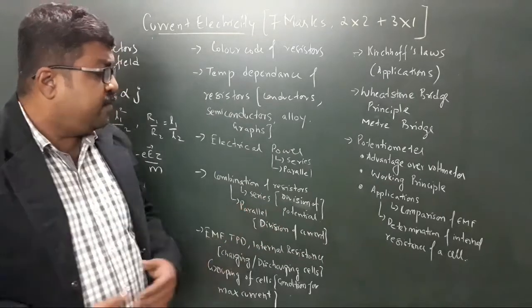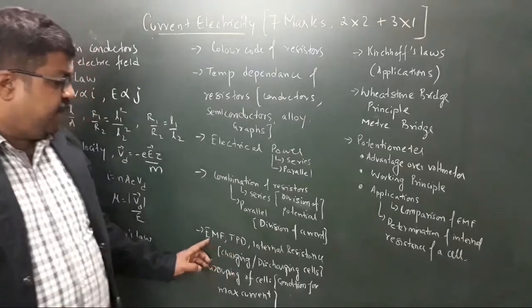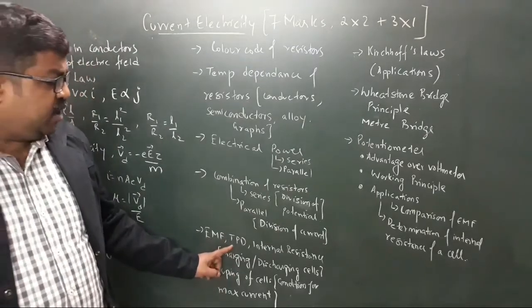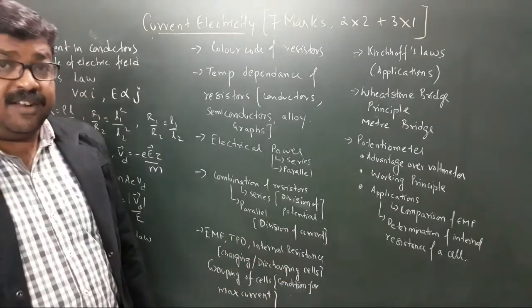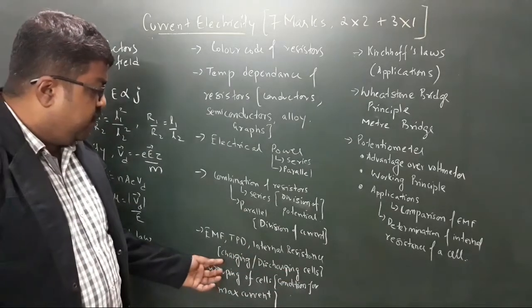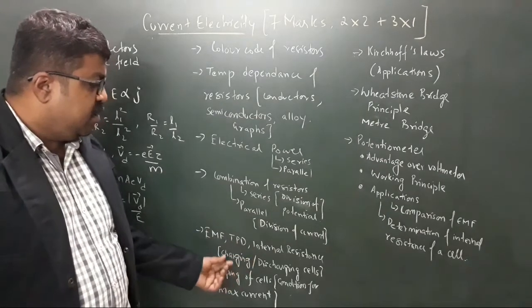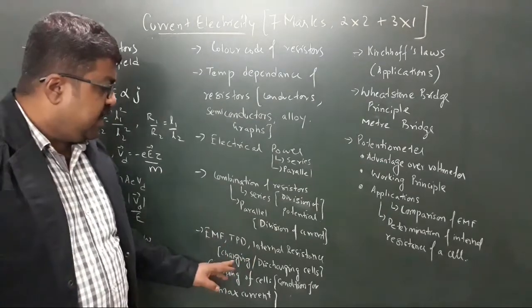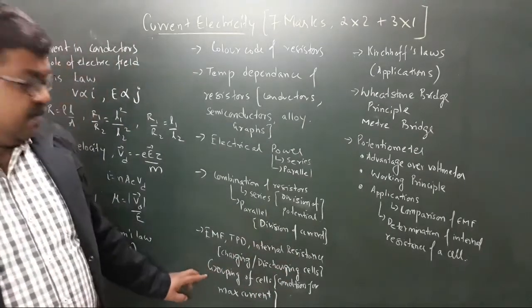Then you have EMF, TPD (terminal potential difference), and internal resistance associated with cells. You have to understand the relation between EMF, TPD, and internal resistance both during charging of a cell and discharging of a cell. Then you have to study grouping of cells: cells in series, cells in parallel, and mixed grouping of cells, and identify the condition for maximum current for each grouping.